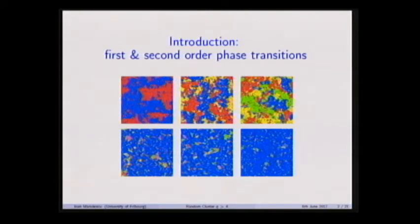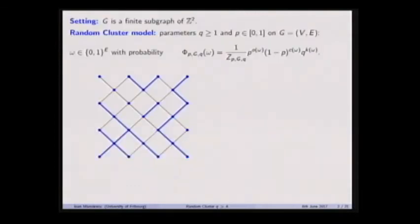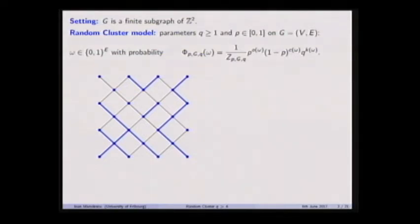You might recognize these pictures if you've been to Hugo's colloquium talk. We're going to work in Z², the square lattice, which we've seen in the lectures. I'm always going to be in two dimensions. We'll define a percolation model called FK percolation that Vincent is also going to work on tomorrow. A percolation model means that you look at open or closed edges and what's interesting to you are connections.